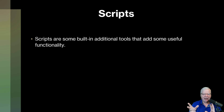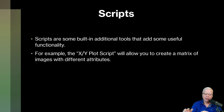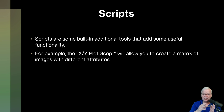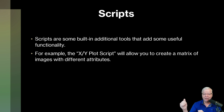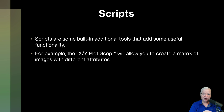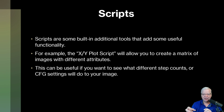Then we get to scripts. Scripts are built-in additional tools that add some type of functionality. For example, there's the XY plot script, which allows you to create a matrix of images based on different attributes. We were talking about CFG earlier — you can say 'create me four images with a CFG scale of six, one of seven, one of eight, and one of nine,' and you'll be able to see them right side by side, so you know where your image is headed depending on the CFG scale you select.